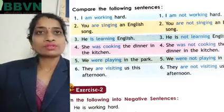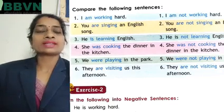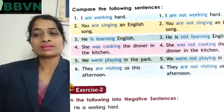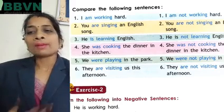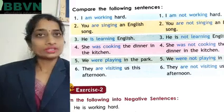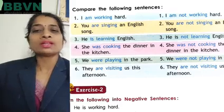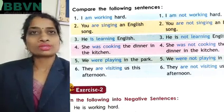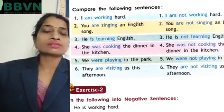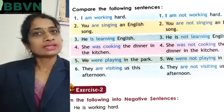Have you seen this? Is mein bhi humne kya kiya hai? Just sentence mein 'not' use kar liya. 'Am,' 'are,' 'is,' 'was,' 'were' — ye jo sare verbs diye gaye hain, in ke baad humne 'not' use kar liya hai. Aur pura sentence as it is hai. So in this way we can make the sentences negative.